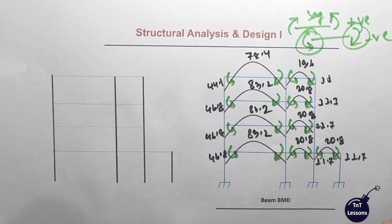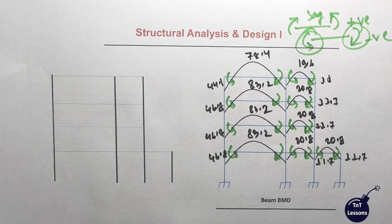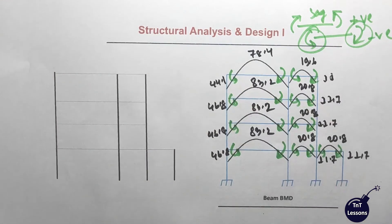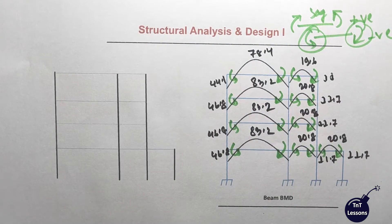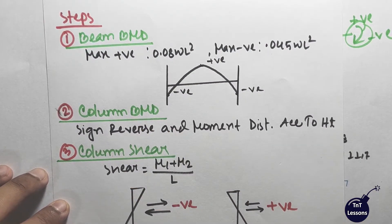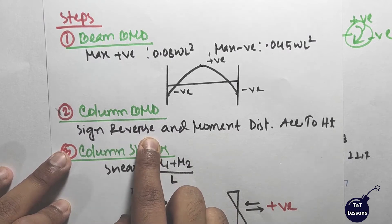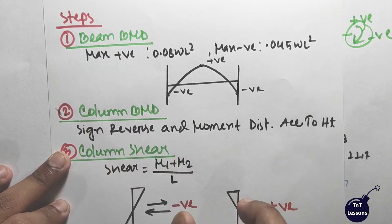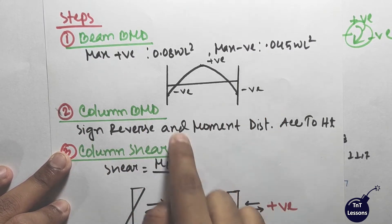So this was our bending moment diagram. What we are doing is this bending moment diagram. I have seen bending moment in this step. The bending moment is a beam. The column bending moment step is to reverse the height — then the moment is at the height. The first step is to reverse the height.